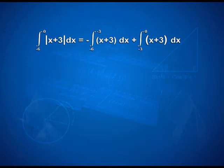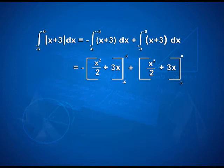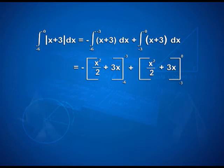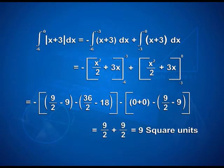Thus the integral from -6 to 0 of |x+3| dx equals: minus of integral from -6 to -3 of (x+3) dx, plus integral from -3 to 0 of (x+3) dx. That equals -[x²/2 + 3x] from -6 to -3, plus [x²/2 + 3x] from -3 to 0. On calculation, we get 9/2 + 9/2, which equals 9 square units.